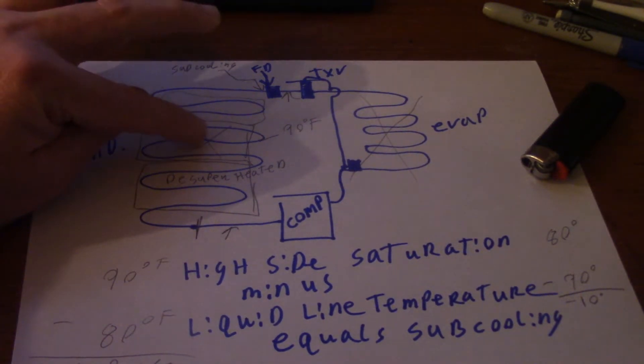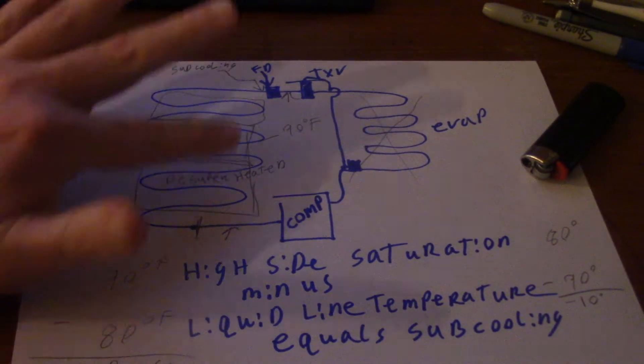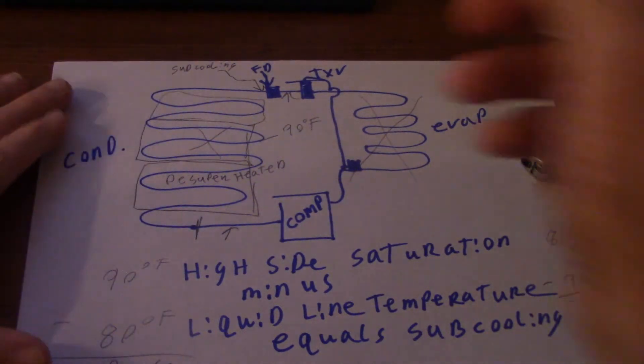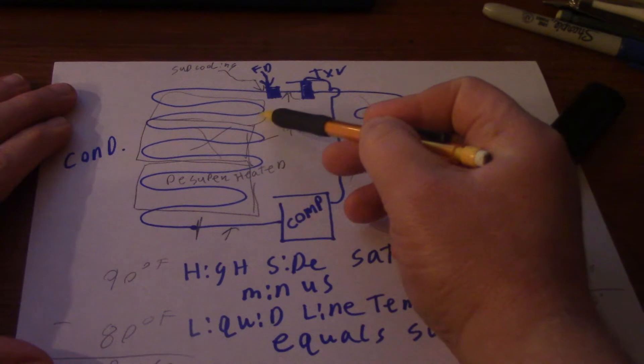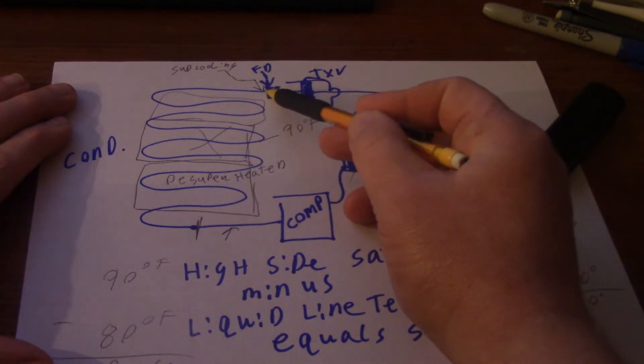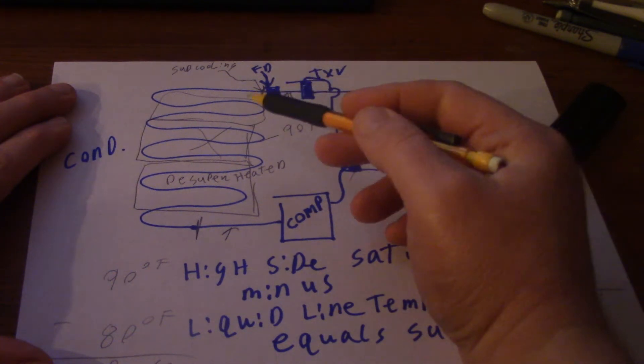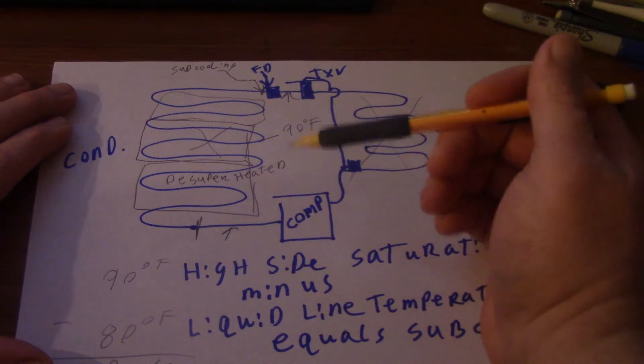Anyways, that's the temperature, the change of state is going on. We're not adding heat, we're not removing heat, we're just changing state at 90 degrees. Once we go through that last portion of the condenser and get right there on the outlet, that's where we can have subcooled liquid, high pressure, warm subcooled liquid for system operation.